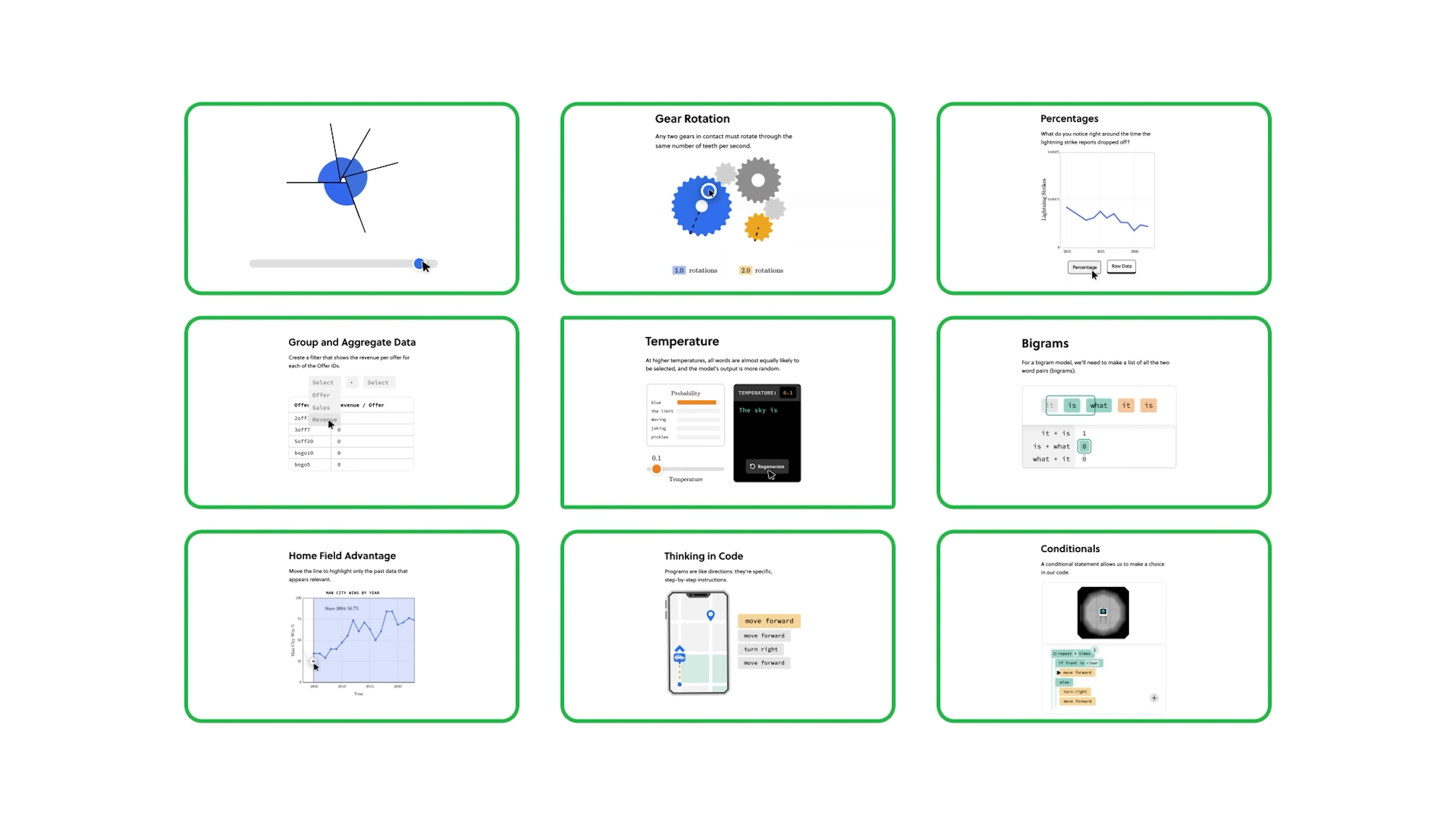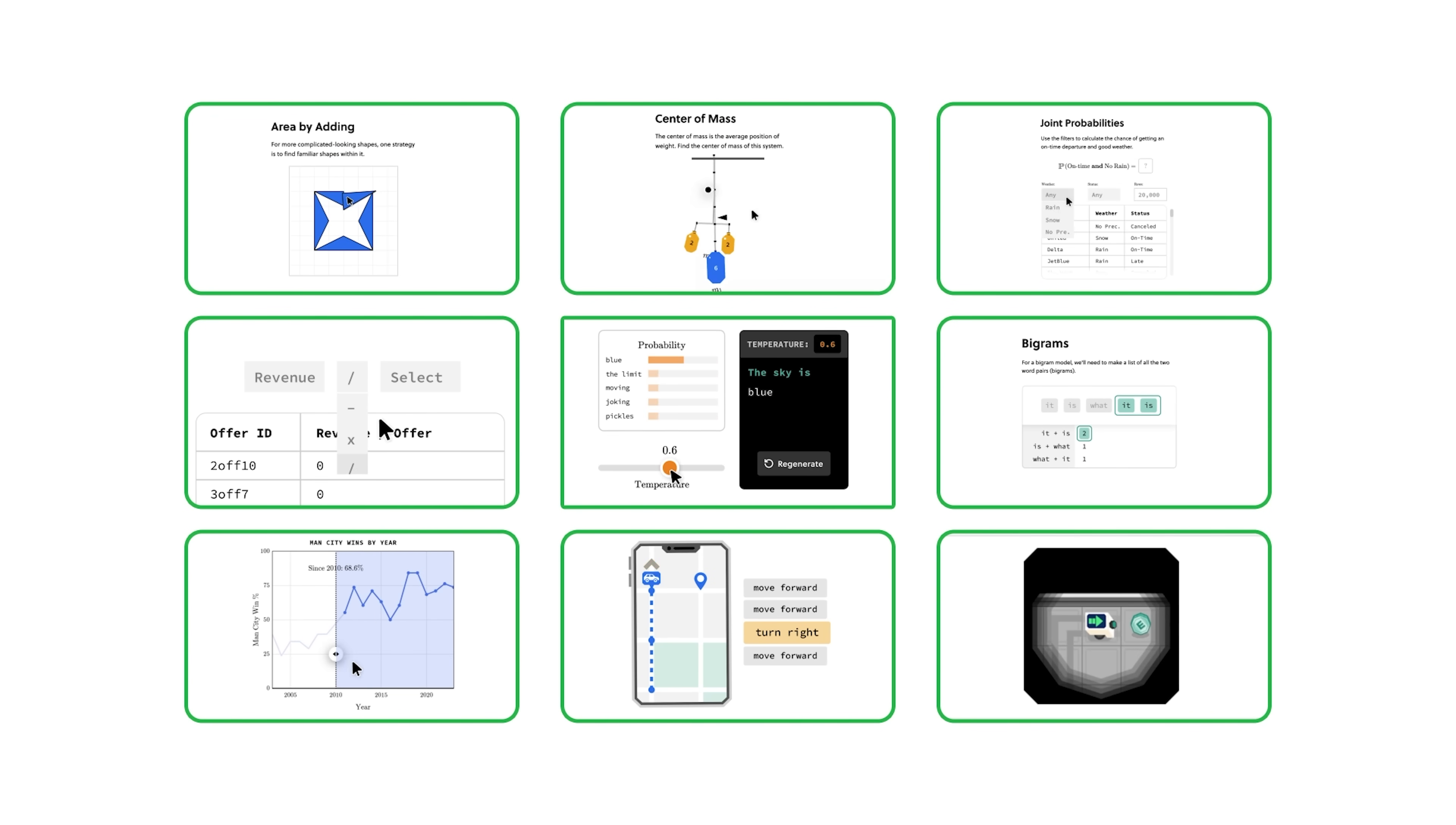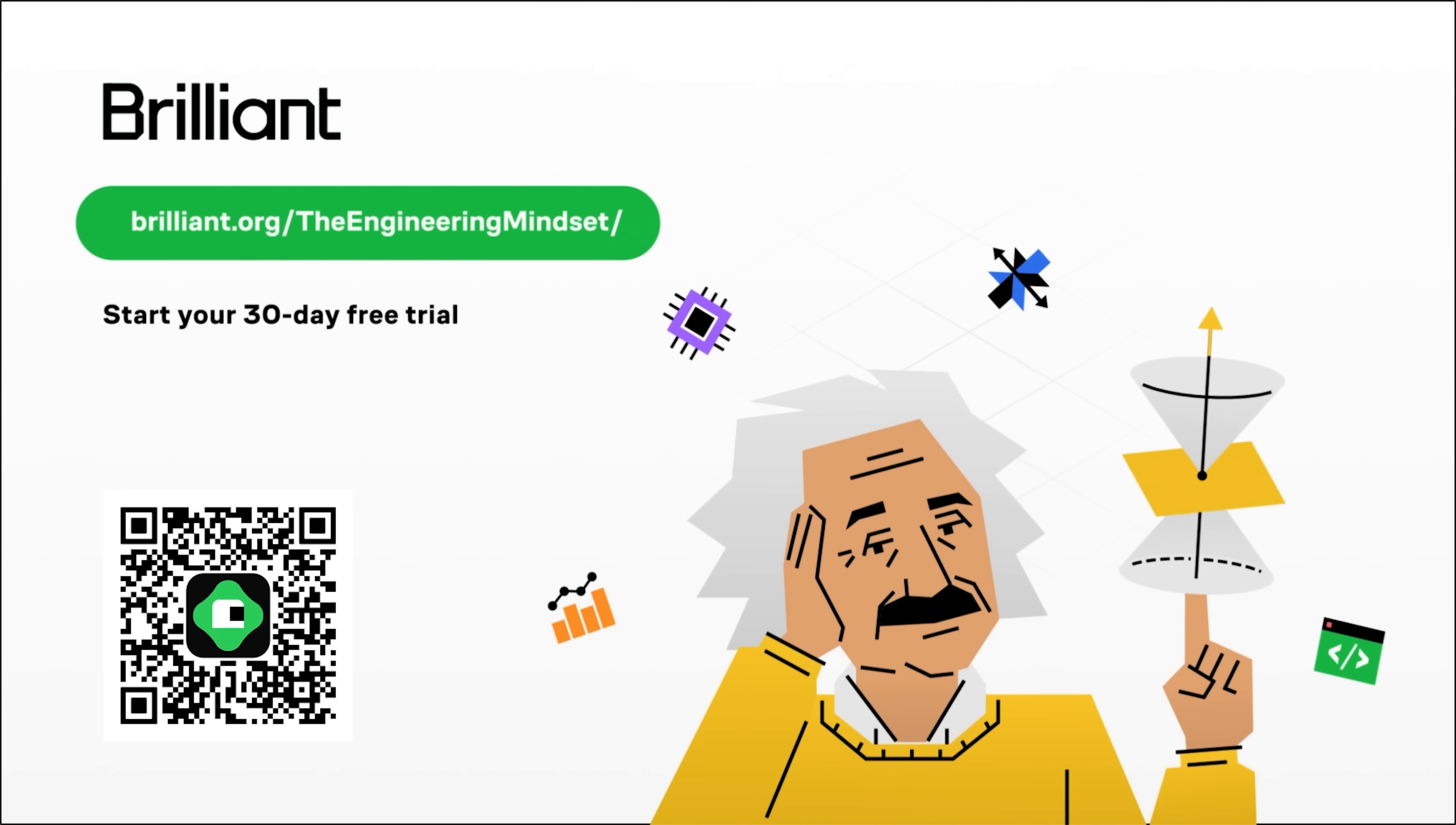So you can try everything Brilliant has to offer for free for 30 days. Just visit brilliant.org/the engineering mindset, or you can scan the QR code. You'll also get 20% off an annual premium subscription. Do check them out. Links down below.